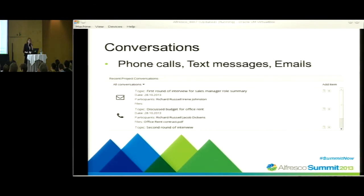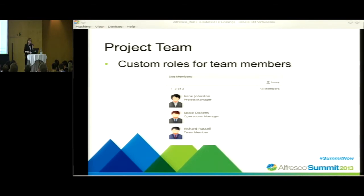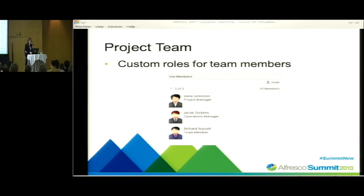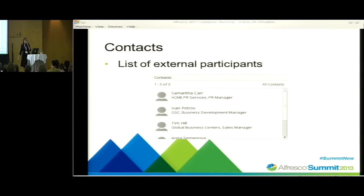Conversations: team members communicate a lot with each other and with external contacts. We need a place to store all conference calls, information, text messages, and emails — not to be out of sync with the project. Of course, we have managers and engineers in the project, and we need custom roles for team members to give them access to different components of the project site. A list of external participants and contacts helps us when we need to find the phone number or email of a partner, subcontractor, or customer.